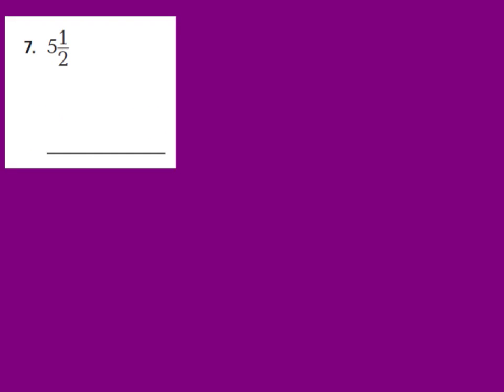Here's number 7. I want you to turn the mixed number 5 and 1 half into an improper fraction by using addition. Go ahead and do this, and press play when you're ready to go over the answer.